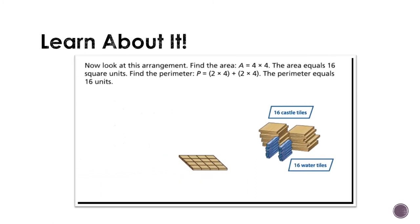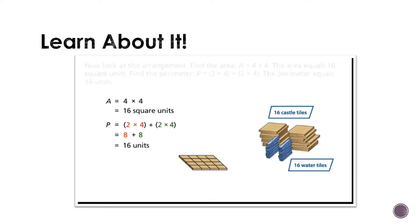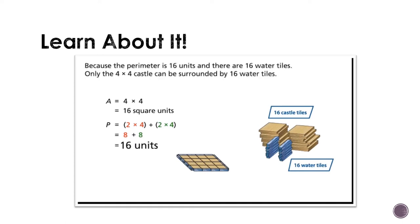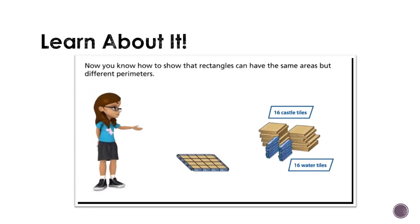Now, look at this arrangement. Find the area: A equals 4 times 4 — the area equals 16 square units. Find the perimeter: P equals 2 times 4 plus 2 times 4 — the perimeter equals 16 units. Why do the water tiles surround this rectangle? Because the perimeter is 16 units and there are 16 water tiles. Only the 4x4 castle can be surrounded by 16 water tiles. Now you know how to show that rectangles can have the same areas but different perimeters.